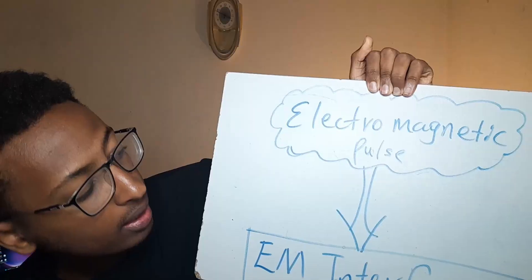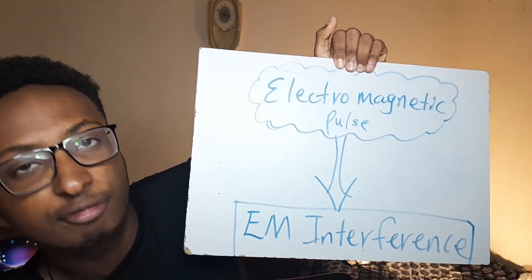EMP, or what we call Transient Electromagnetic Disturbance, is a brief burst of electromagnetic energy — I took that from Wikipedia. But it is still essentially true. Electromagnetic pulses alone do not have an effect until they cause an effect, and this effect is what we call electromagnetic interference — a sudden disturbance in any kind of system.